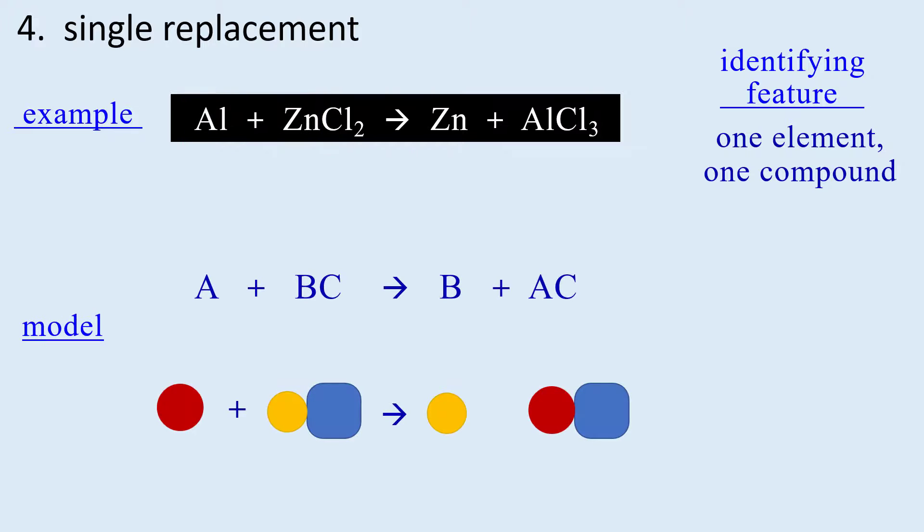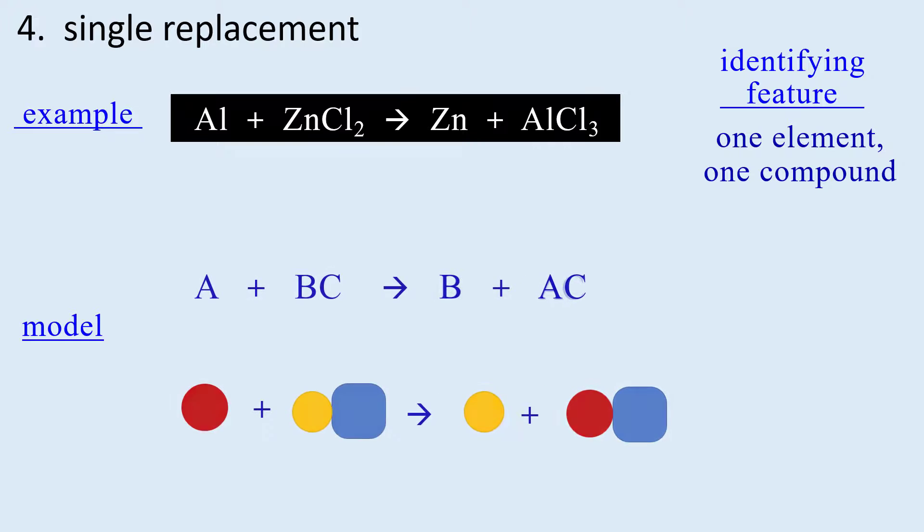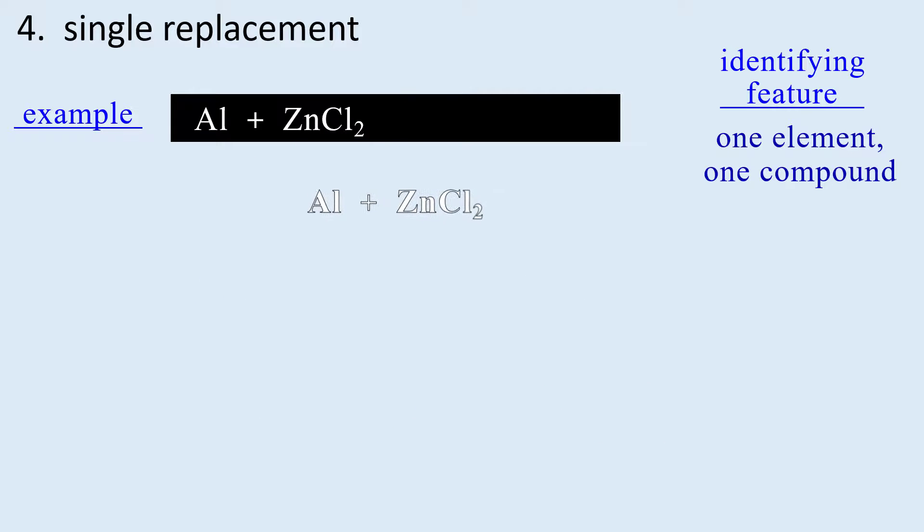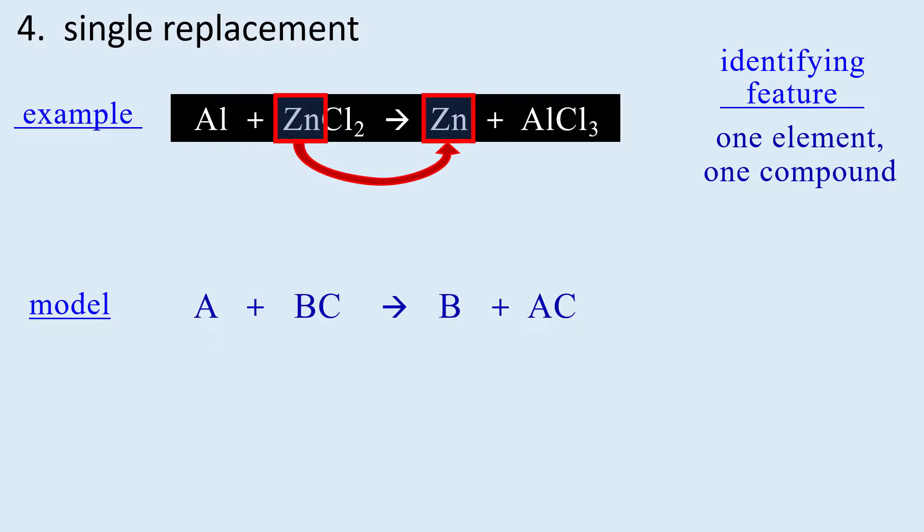This is what our model represents. One element, one compound. The arrow represents the reaction which is where the metals switch places to become the products. Notice the neutral aluminum becomes an ion whereas the zinc ion becomes neutral.